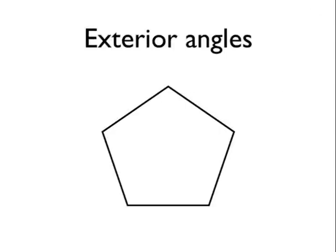You get exterior angles on all polygons. Here I've got a regular pentagon. Let's start off by understanding what exterior angles actually are. You get exterior angles by extending each side at each vertex on the polygon.